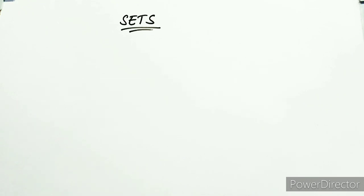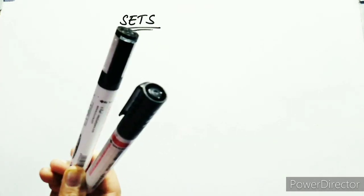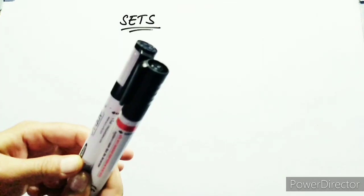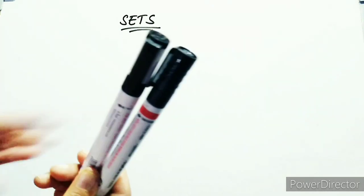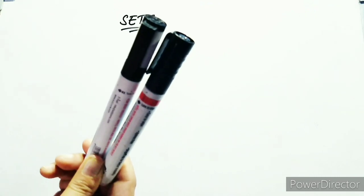What is a Set? A set is nothing but a collection of things that have something in common. Take an example — this is a Marker Pen. It is one of the set of Marker Pens.